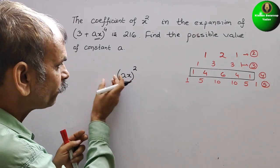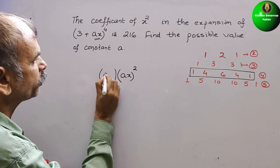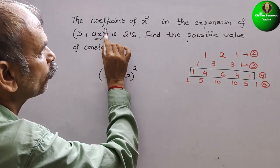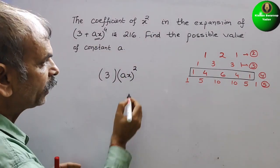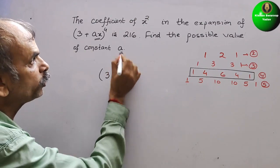So what is your first term now? So first term, they have given you 3. So we know that the power is 4. So here 2 and here it will come 2. 2 plus 2 is 4.